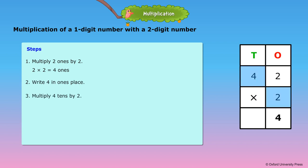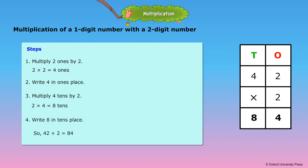Step 3: Multiply four tens by 2. 2 × 4 = 8 tens. Step 4: Write 8 in the tens place. So, 42 × 2 = 84.